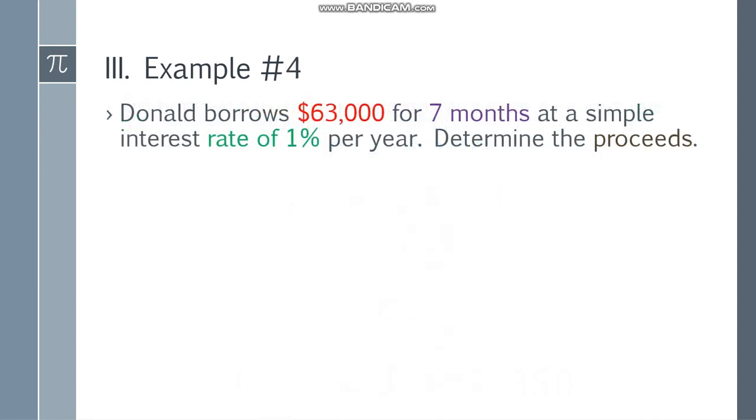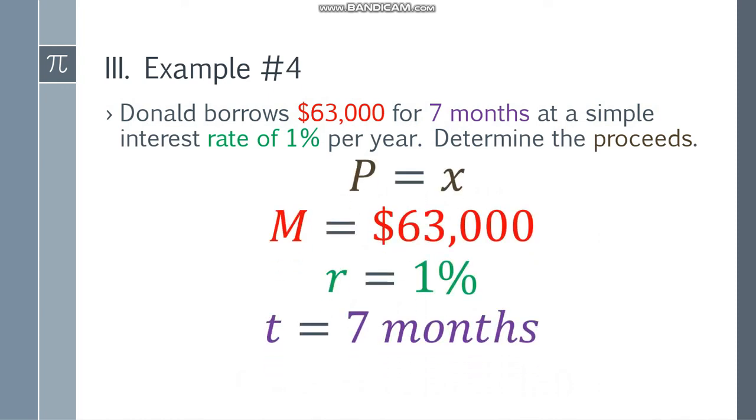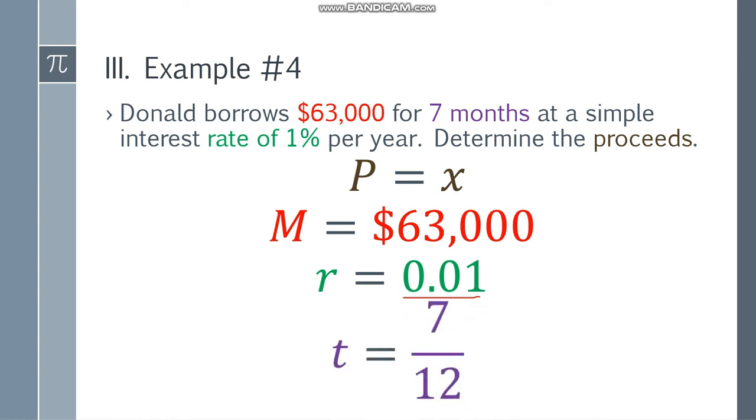Example number four. Donald borrows $63,000 for seven months at a simple interest rate of 1% per year. Determine the proceeds. They're not asking for the discount here. From the given, X is the proceeds, $63,000 is the maturity value, R equals 1%, and T is seven months. Change the rate to 0.01 and the time to 7 over 12.